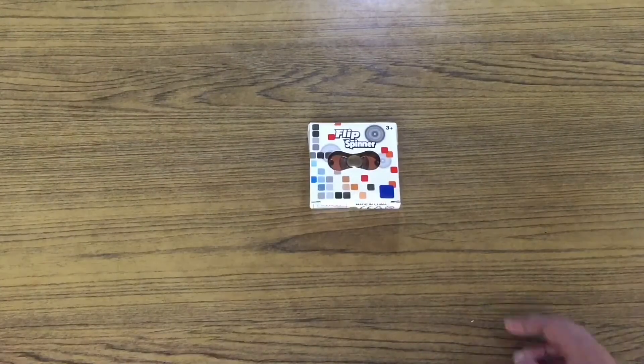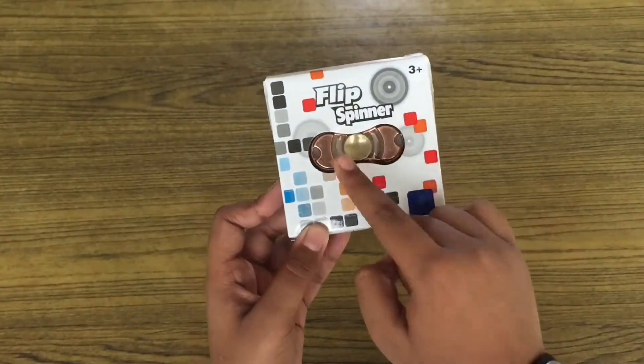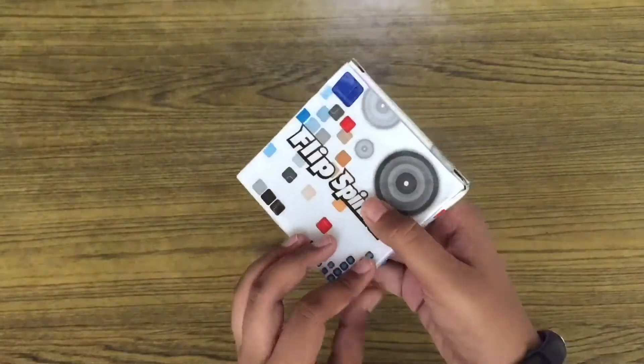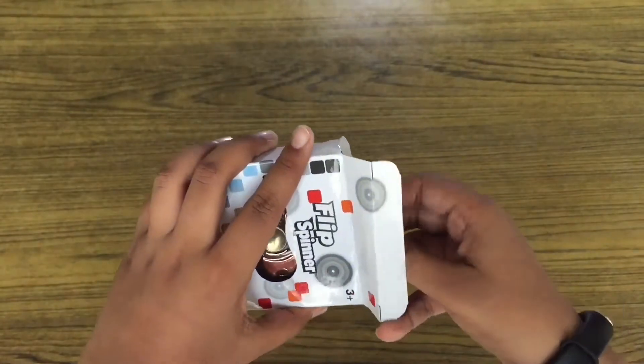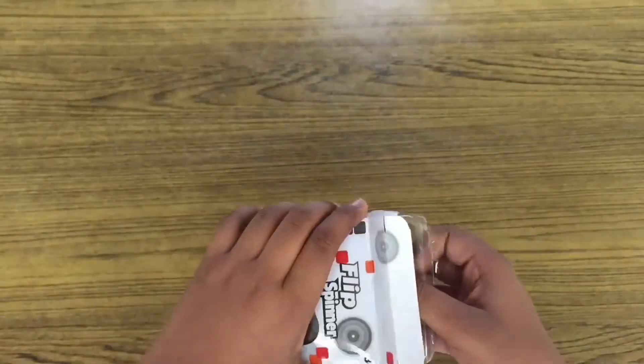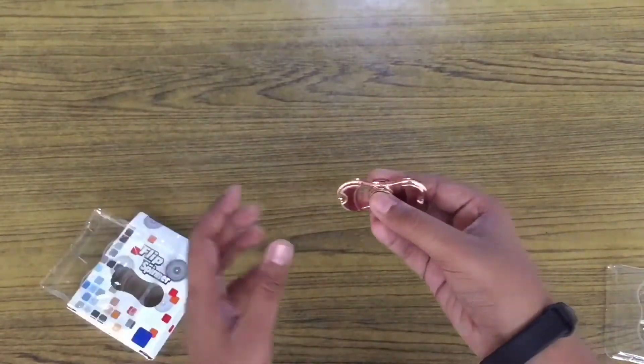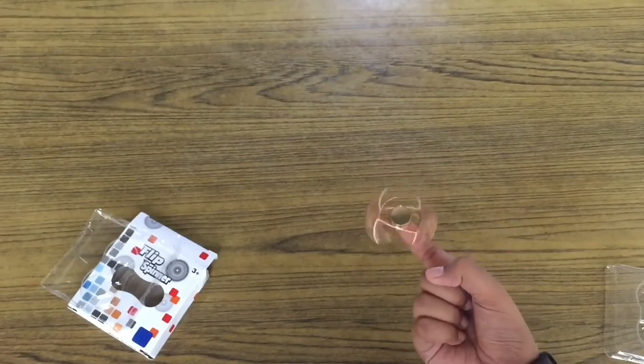The first fidget spinner is this Flip fidget spinner. I don't know why it's called Flip spinner, but I think that's because of the size. As you can see, there are some square designs at the back. Let's open it up. This is the Flip fidget spinner, it's really small and well-balanced. I've got the chrome version; there's black, gold, silver, and copper versions available.